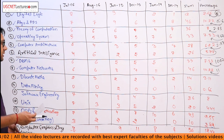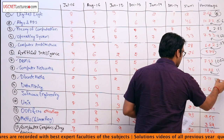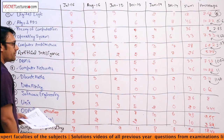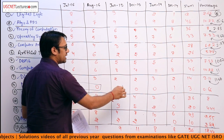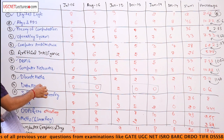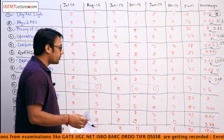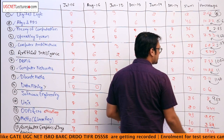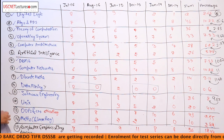Then we have discrete mathematics. Discrete mathematics initially was 11.67 marks, which has now decreased to 8%. But again, there is not a huge difference. Software engineering is again one of the important subjects for you.